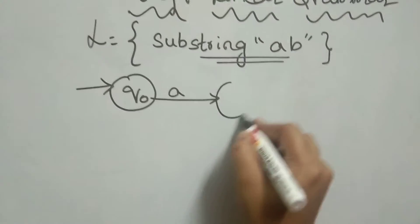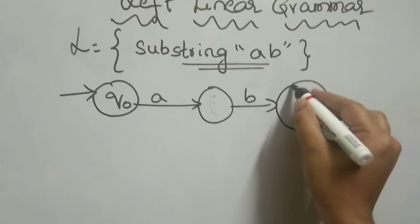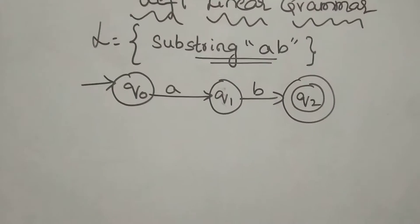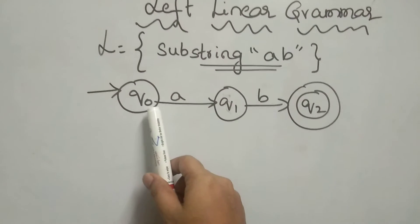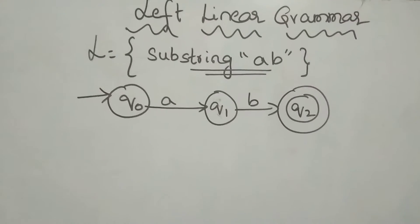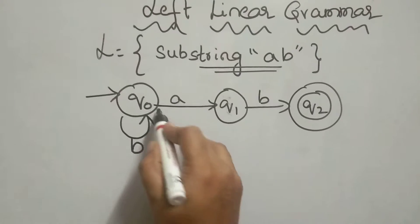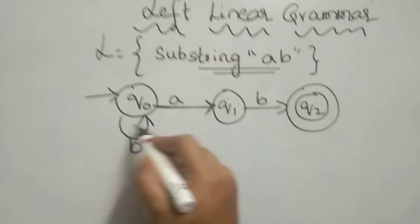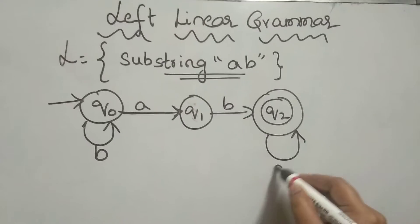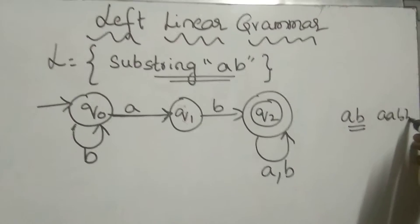The machine must accept 'ab'. Then it is in the final state. In the finite automata we have to define the transition for both input symbols. Upon 'a', next upon 'b'. If we have a substring, we have a self loop. The last part is: upon 'a', that is substring 'b', 'a', 'b', and then after any number of 'a's and 'b's.